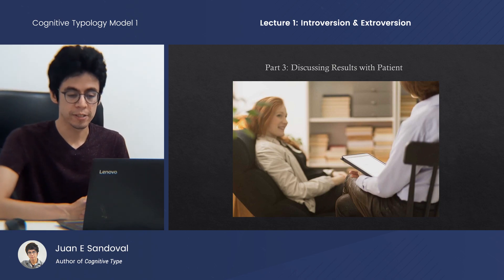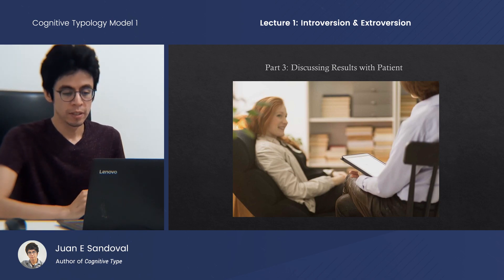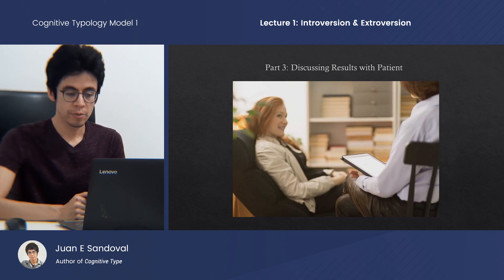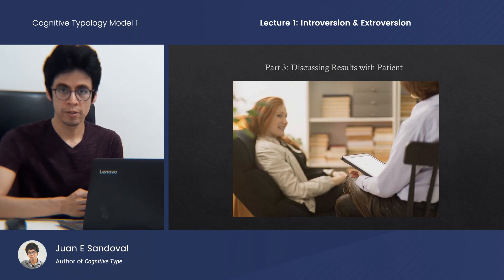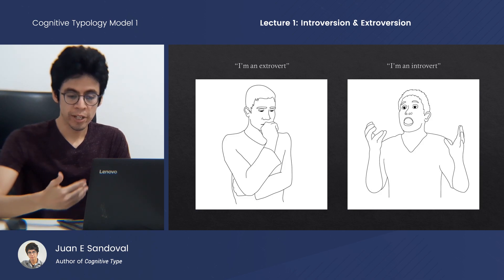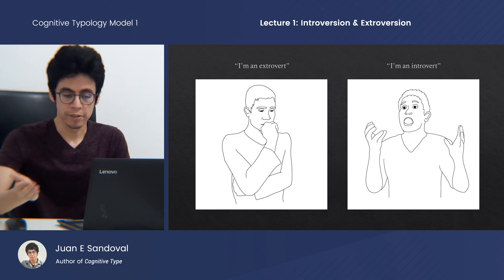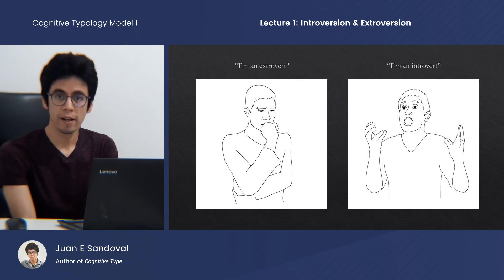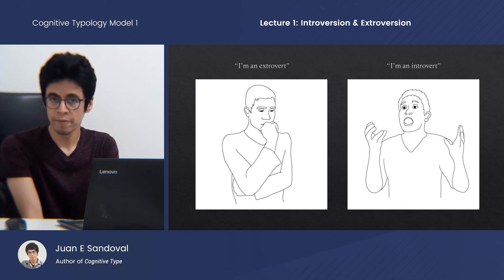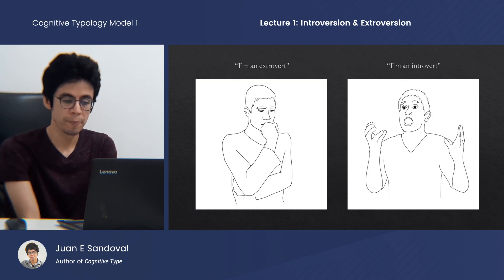Which brings us to the final part of this talk: discussing the results with the patient. It's easier to talk about results that align with the patient's self-understanding, so we'll skip that and focus on misalignments. Earlier, we gave an example of two individuals who labeled themselves as introvert or extrovert, yet according to our elementary facts of the body-mind connection, they had themselves typed backwards. We actually cannot leave out the subjective factor — the patient's subjective opinion. We should never simply dismiss their subjective account. Instead, a therapist would do well to ask the patient to expand upon what they mean by introversion and extroversion.